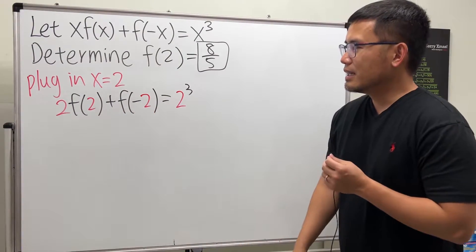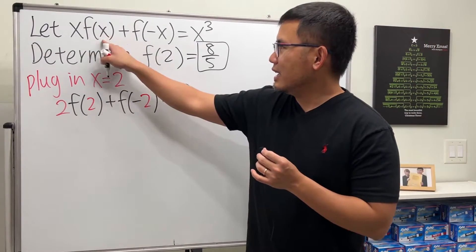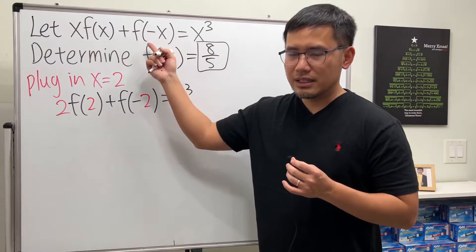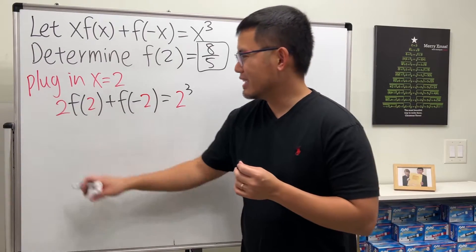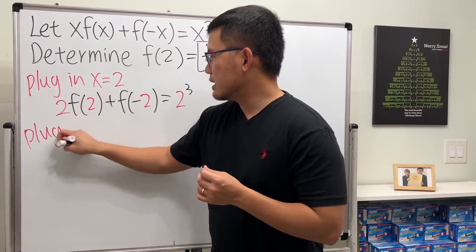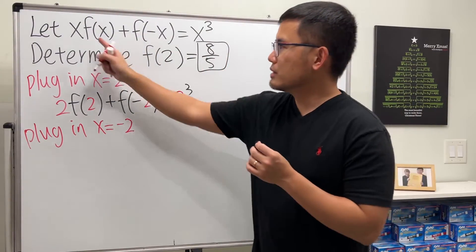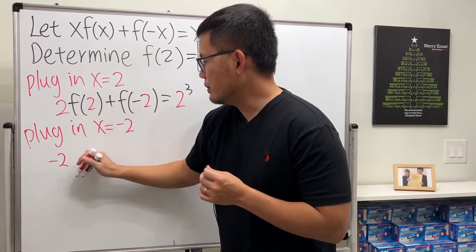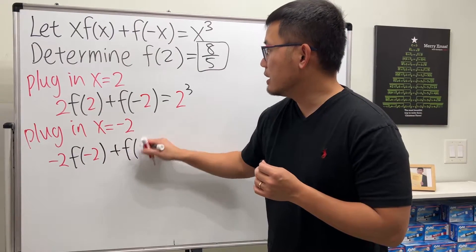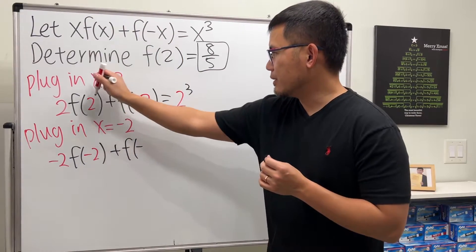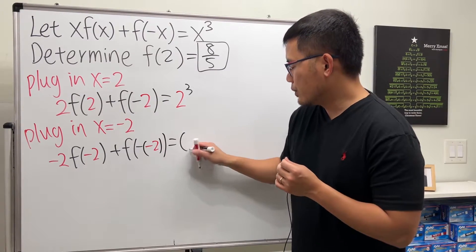So we have to somehow get rid of that. How? Well don't worry, because this is x, that's negative x. Just plug in negative 2 so we can still end up with a similar equation. Check this out. Next I'm going to plug in x = -2 into all the x's, so we get -2f(-2) + f(2) = (-2)³.